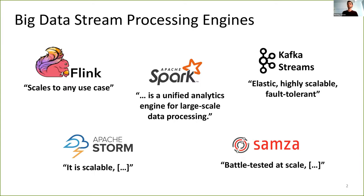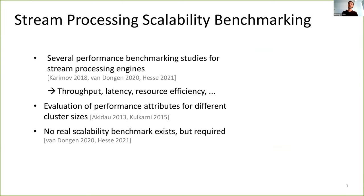When talking about stream processing engines, we typically refer to systems such as Apache Flink, Spark, or Kafka Streams. You might have heard of these systems. And as these quotes from the websites show, all of these systems claim to be highly scalable. They promote scalability as a key feature.